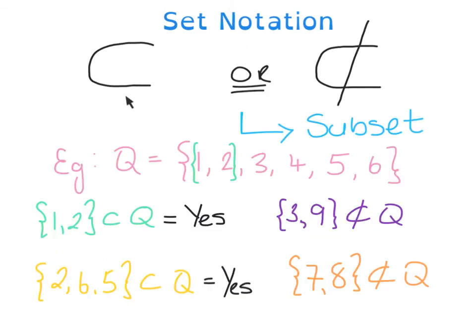B complement then means you cover B and you say list everything else outside of that. Here we have subset or not a subset. So let's take the set Q. It's got numbers 1 to 6. Is 1, 2 a subset of Q? Yes, because 1 and 2 is part of Q.